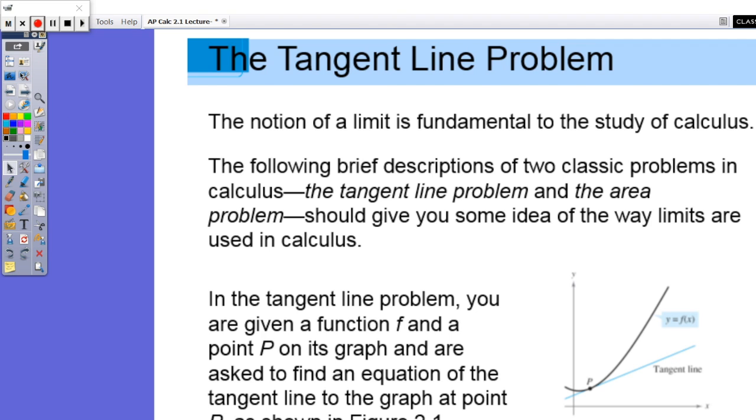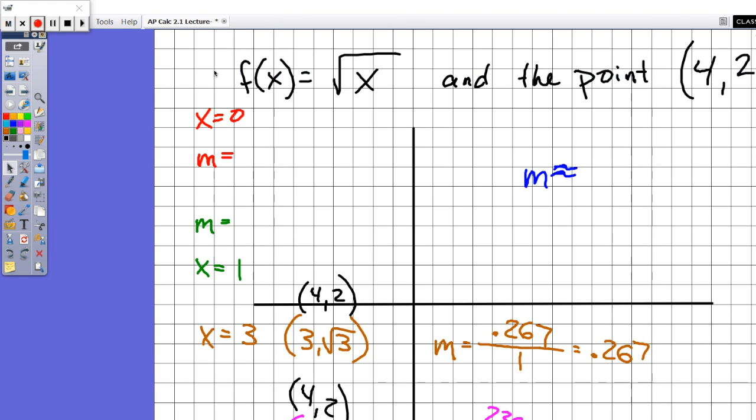So we're going to look at a little specific example here. So here's our function f(x) is equal to the square root of x and the point (4, 2). So if you think about just a little brief drawing here of our graph, obviously that's going to be an ordered pair. We'll be one here and (4, 2).